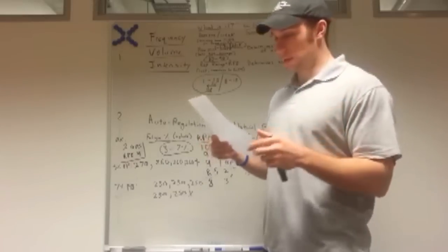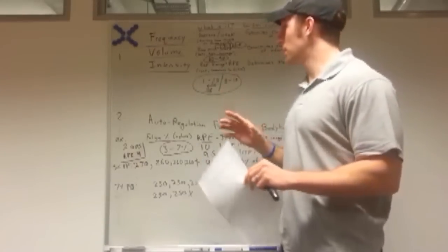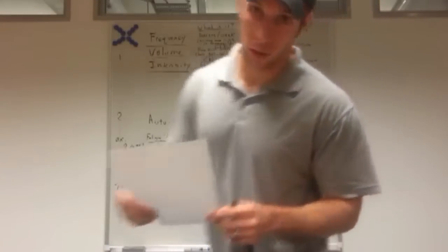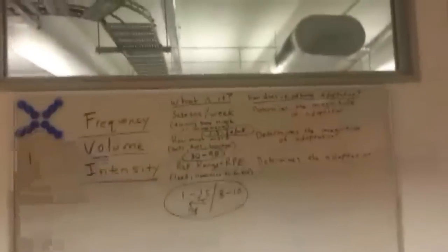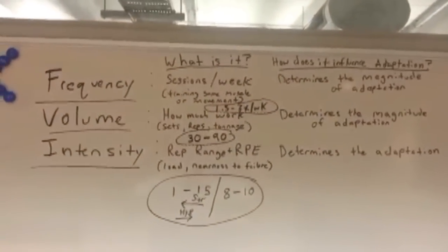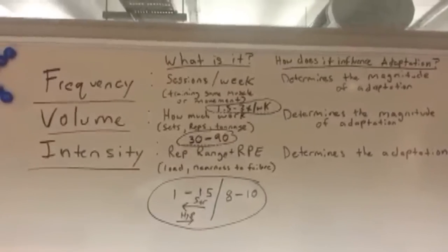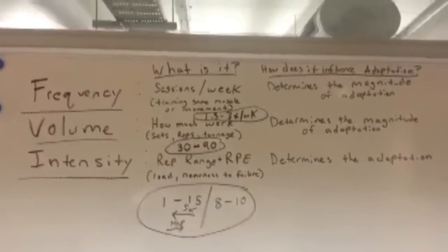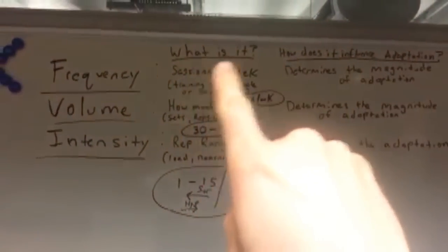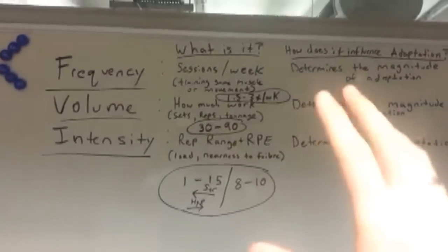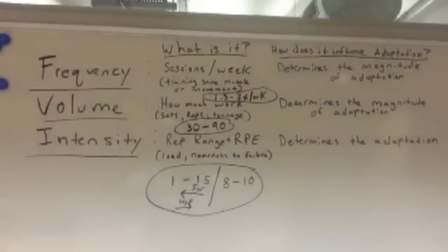Alright, great questions. Let's start with just getting on the same page and talking about frequency, volume, and intensity. The cornerstones of a program are frequency, intensity, and volume. These are the big picture things and we're going to talk about them in three ways: what is it, how does it influence adaptation, and then what are some of the optimal ranges that make most sense for the goals of strength and muscle gain?